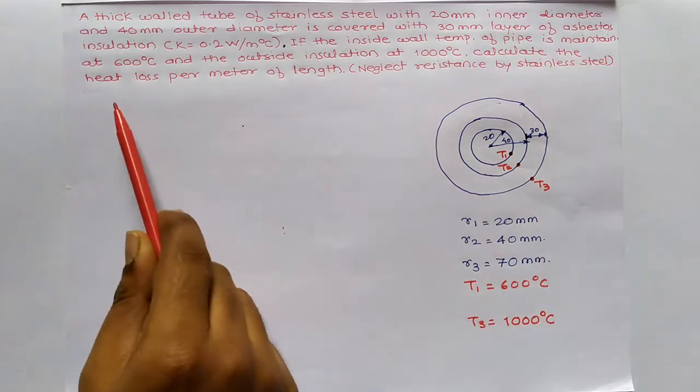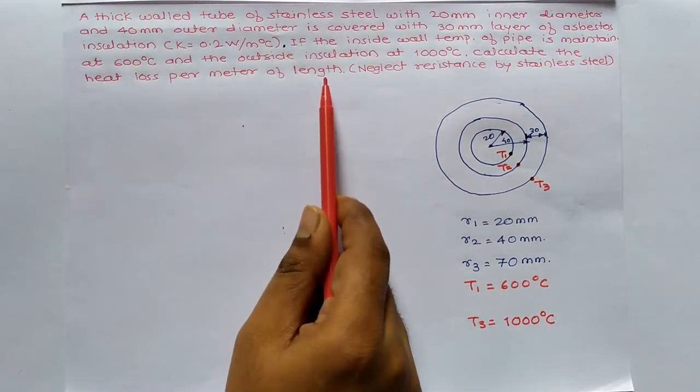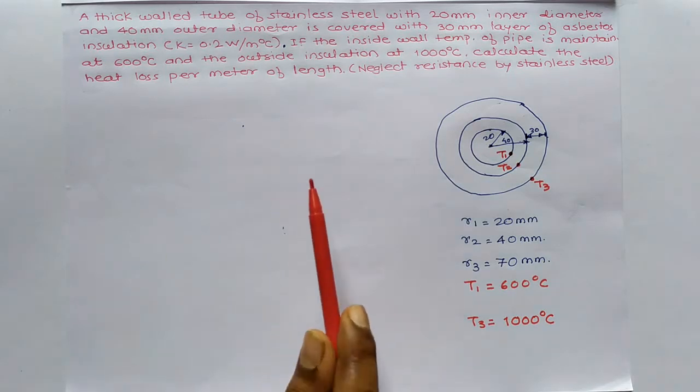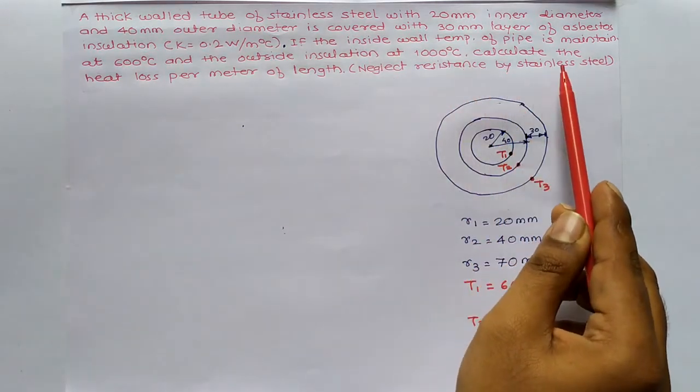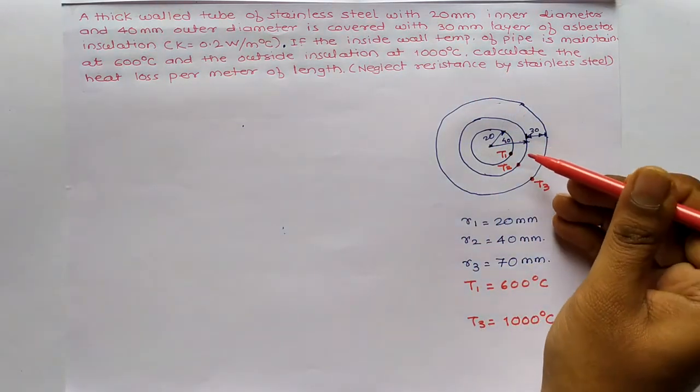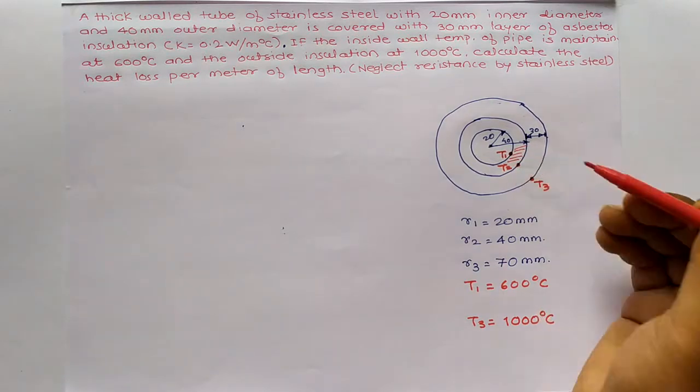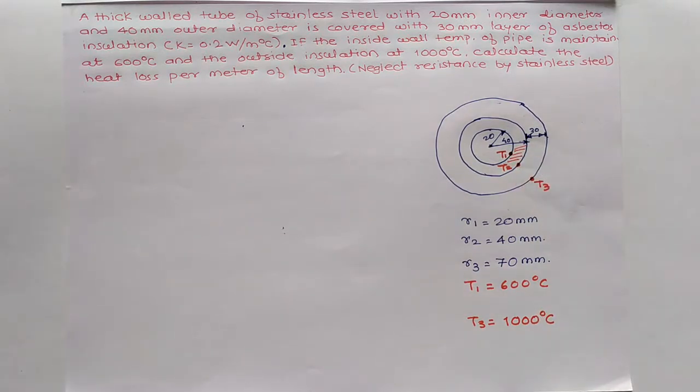Now, calculate the heat loss per meter of length, since they have not given the length. And neglect the resistance by stainless steel. So we need to neglect this resistance.